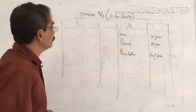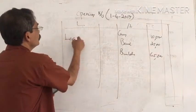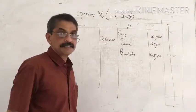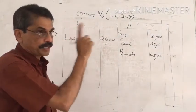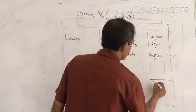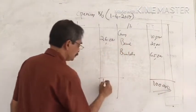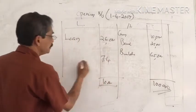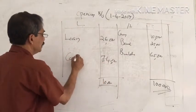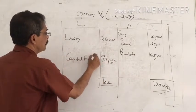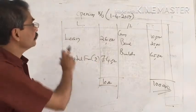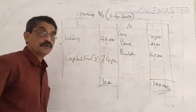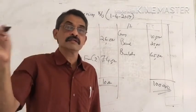Looking at the loan on the liability side: the loan is Rs. 2,00,000. Bank is Rs. 25,000 and building is Rs. 65,000 on the asset side. The capital fund is then calculated as the balancing figure — assets minus liabilities. The total assets give us Rs. 1,00,000 and the loan is Rs. 2,00,000, giving a capital fund of Rs. 75,000.